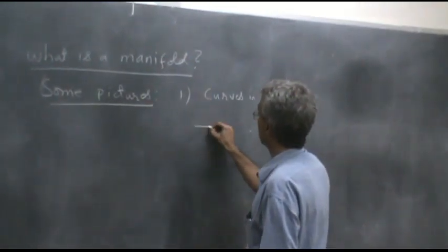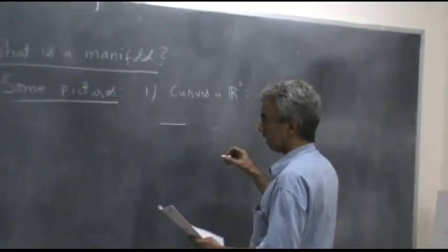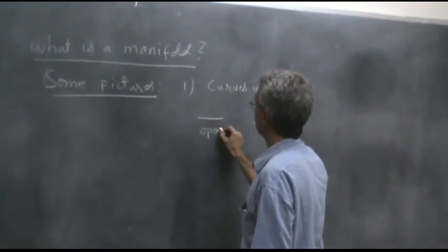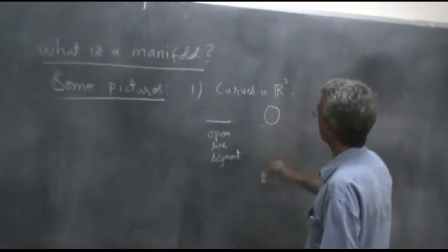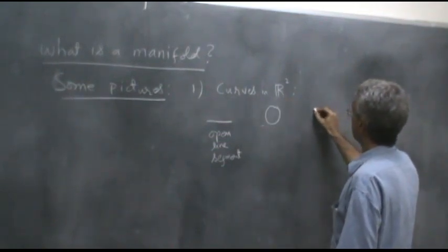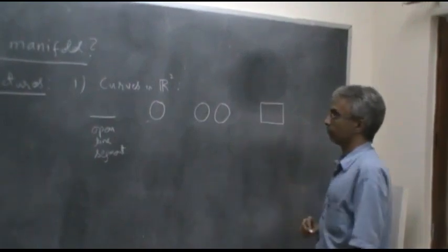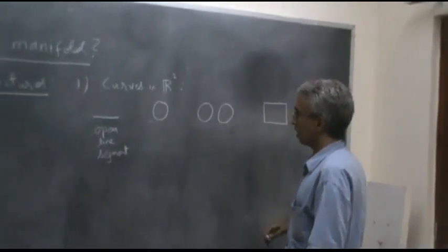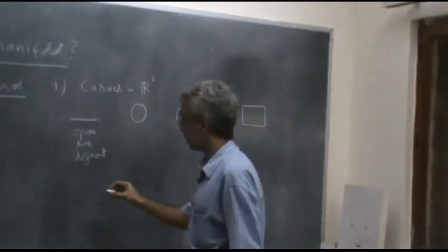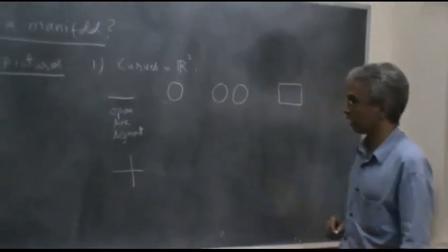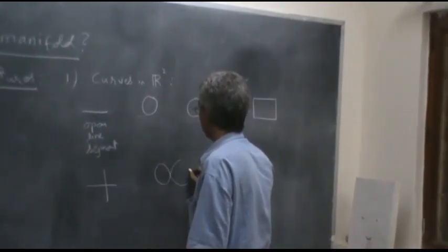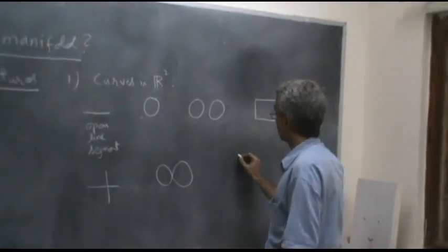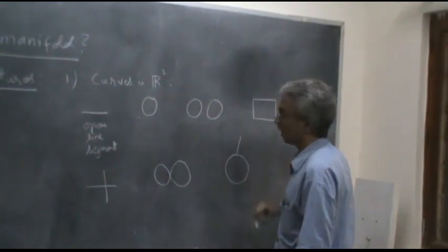The first one is just an open line segment. The second one is a circle. The third one is two circles. The fourth one is a square. In the second row we will look at two lines intersecting at a point, two circles touching at a point, and a circle with a line segment attached to it.